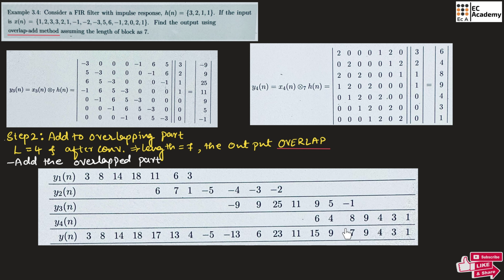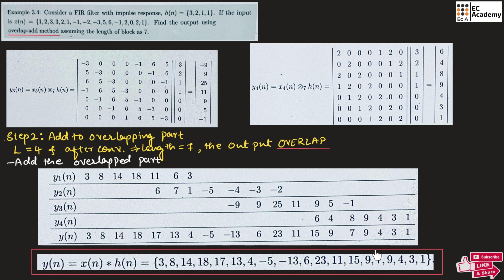So finally this is the sequence obtained after convolution of x of n and h of n. This is the convolution y of n obtained after performing the convolution of x of n and h of n using the overlap-add method. This is about the problem on the overlap-add method. Hope you have understood the topic. Thank you.